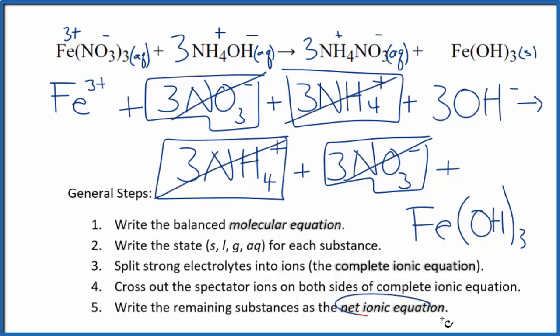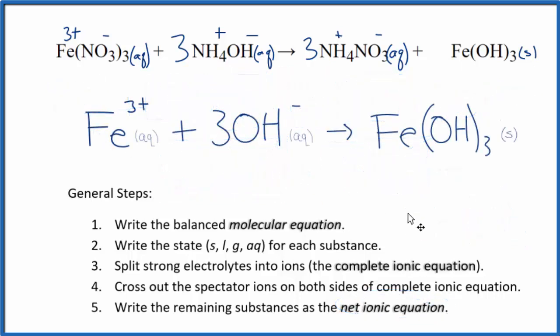What's left is the net ionic equation for Fe(NO3)3 plus NH4OH. Or I'll clean it up a bit, write the states in. We'll have our net ionic equation.